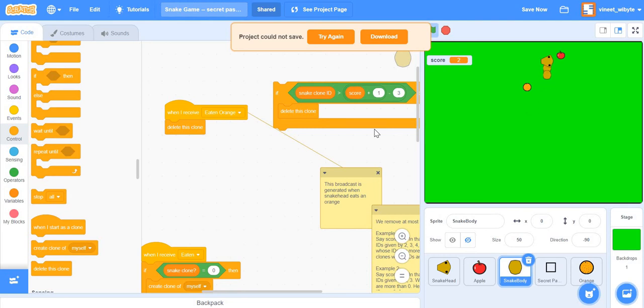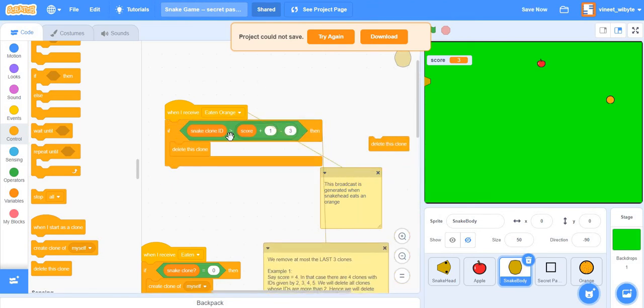So notice, I've got two tails, I've got four tails now. I'll get six tails. If I just go and eat orange, suddenly all of them have got removed. So this is not the right way, but then what is the right way? That's what we are going to talk about. We will figure out exactly which clones to delete. And how do we do that?